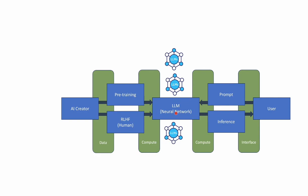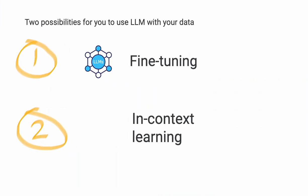Since they work on a lot of data, it's usually very hard to start from scratch — unless you have plenty of money, it's not easy. What you can do with your own data are two possible paths. One is taking an existing LLM and fine-tuning it with your data, and the second possibility is what we call in-context learning.